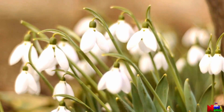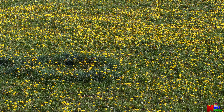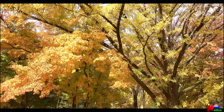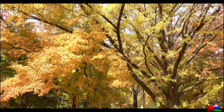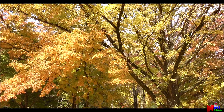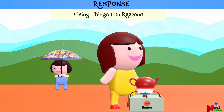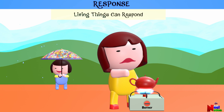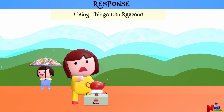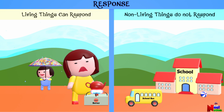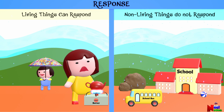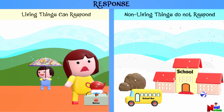Flowers might open in the morning and close at night. The shedding of leaves by trees in the fall is indeed a response to the environment. And if you touch something hot like a stove, your hand quickly moves away — that's your body responding to the heat to keep you safe. But non-living things like rocks, buildings, or toys can't do anything on their own when something changes; they stay the way they are.